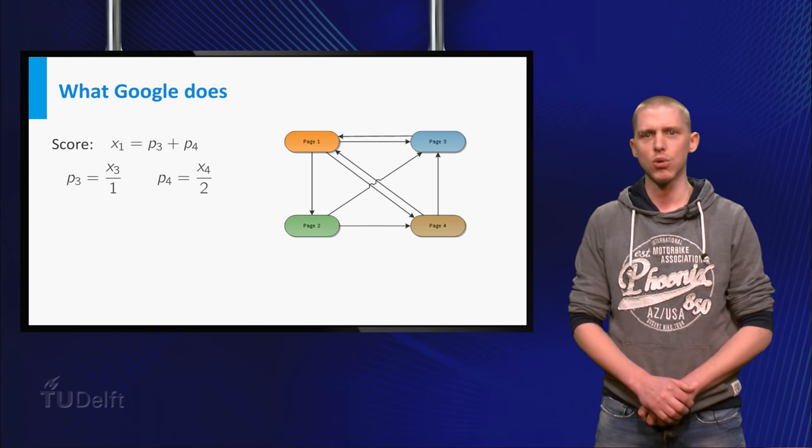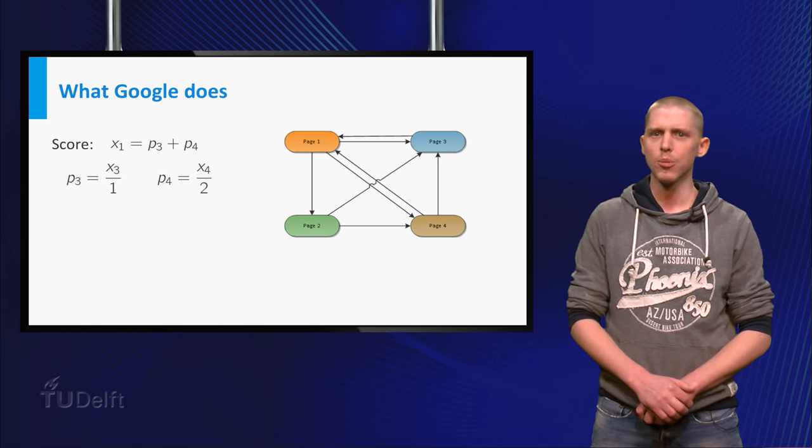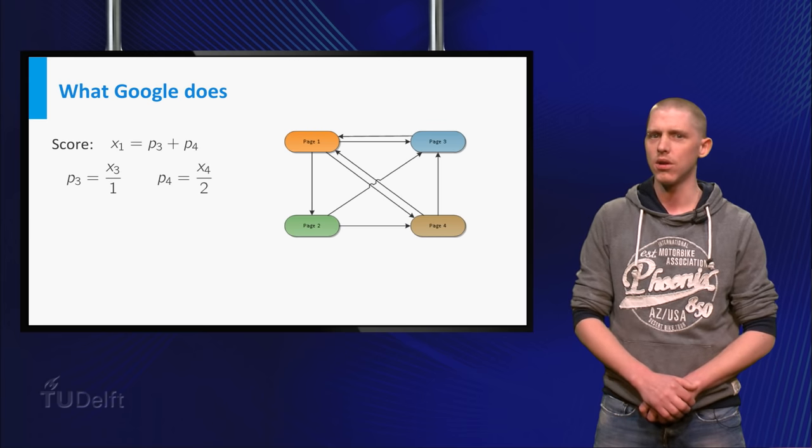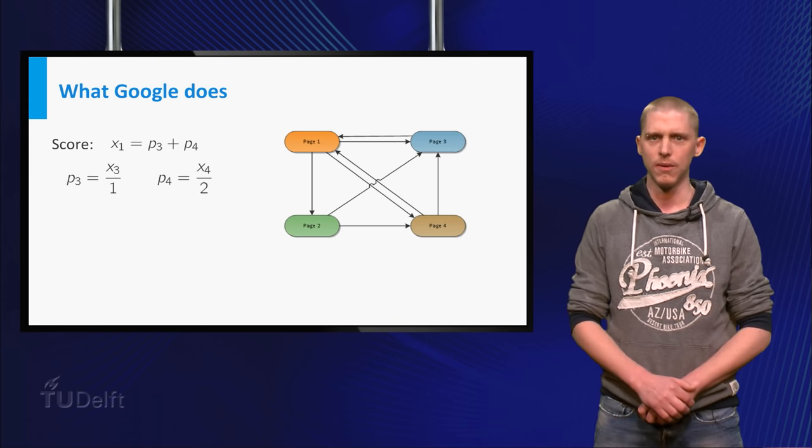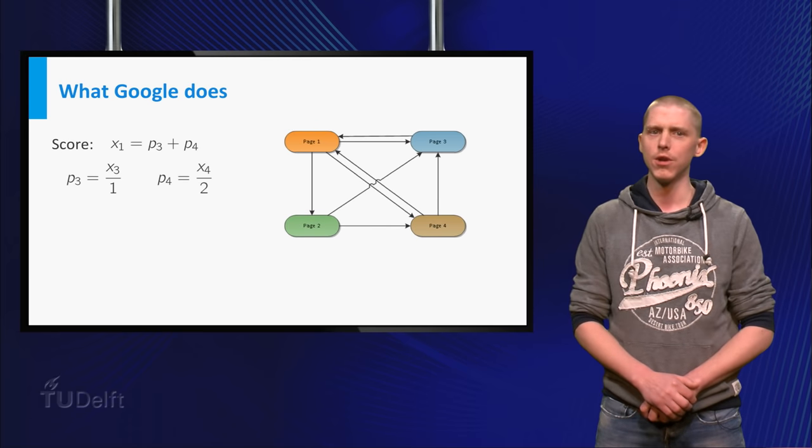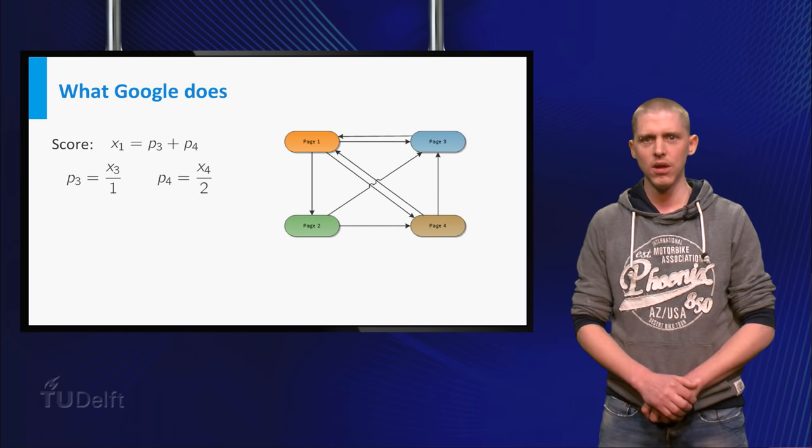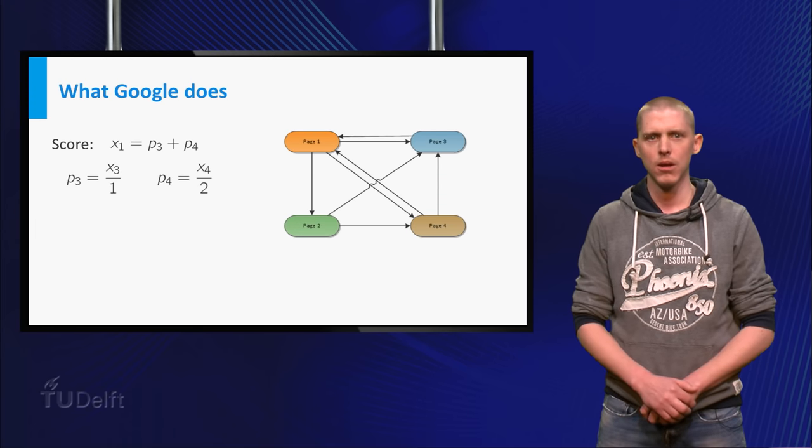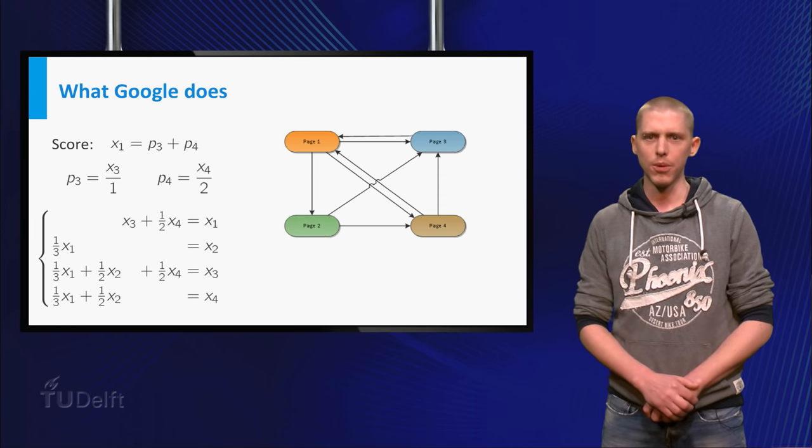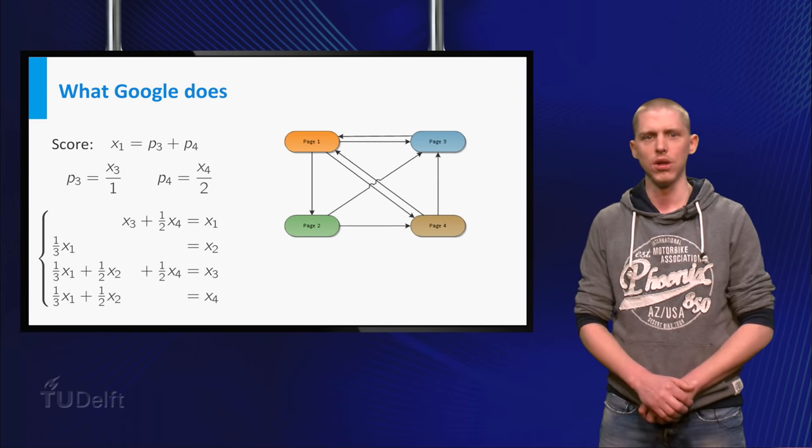If xi is the score of page i, we have for page 1 a score x1 equals x3 over 1 plus x4 over 2, because we have links from page 3 and 4 to page 1, and page 3 has one link where page 4 has two links. We can do the same for the other four pages, which gives us the shown linear system.